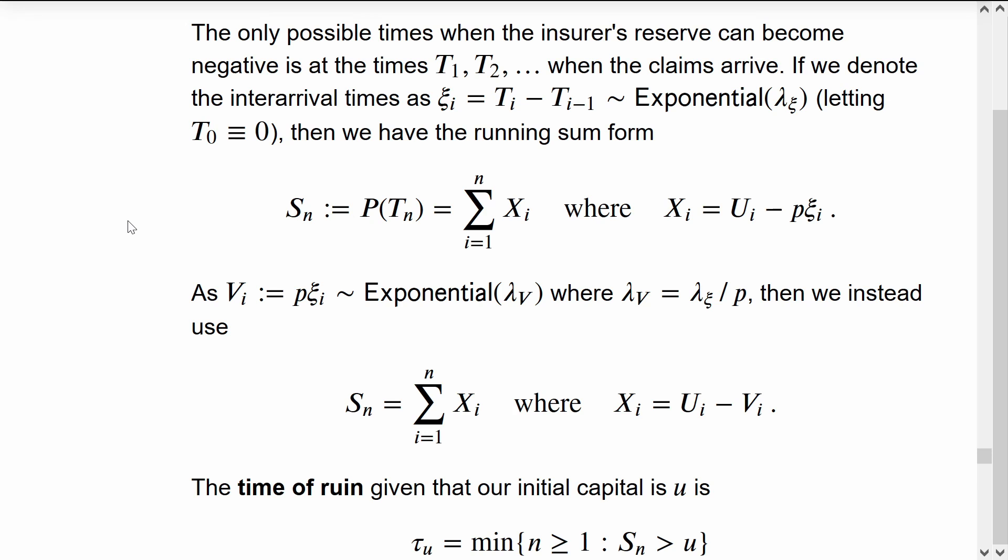The net payout calculated at each of these arrival times will have the notation S_n because it can be written as a cumulative sum of these X_i's, where each X_i is the size of the new claim.